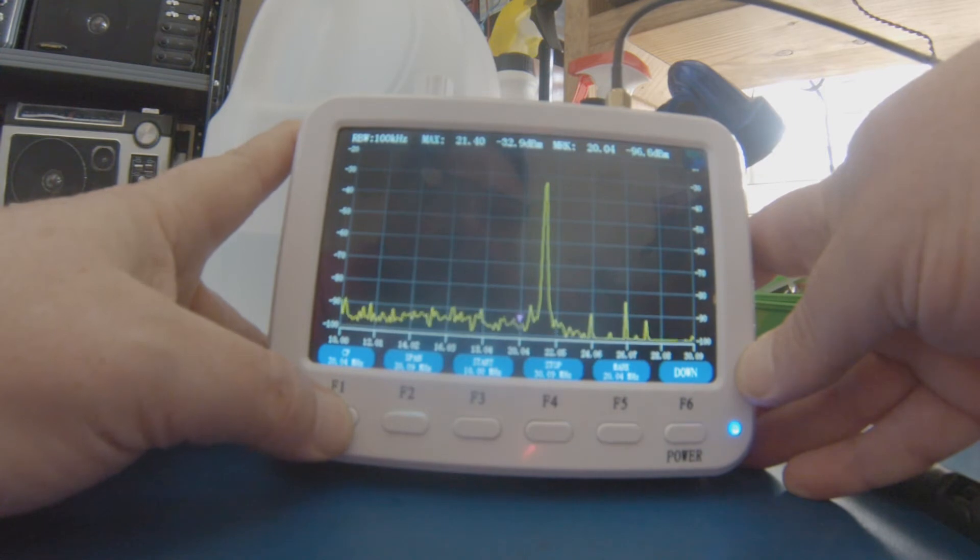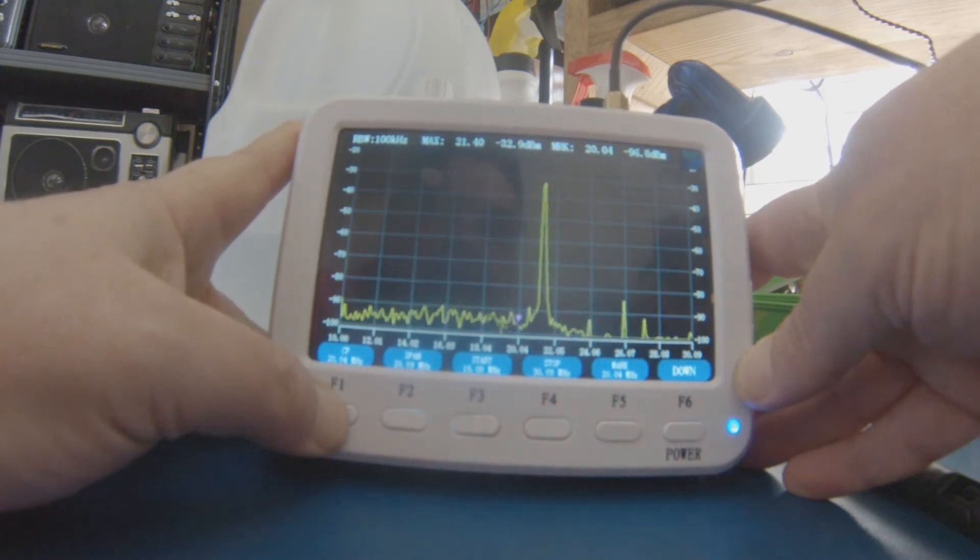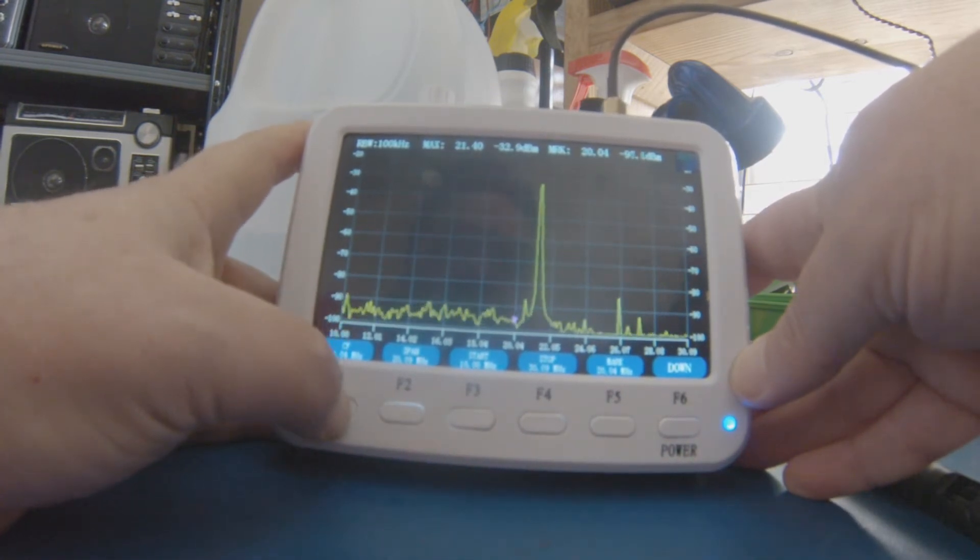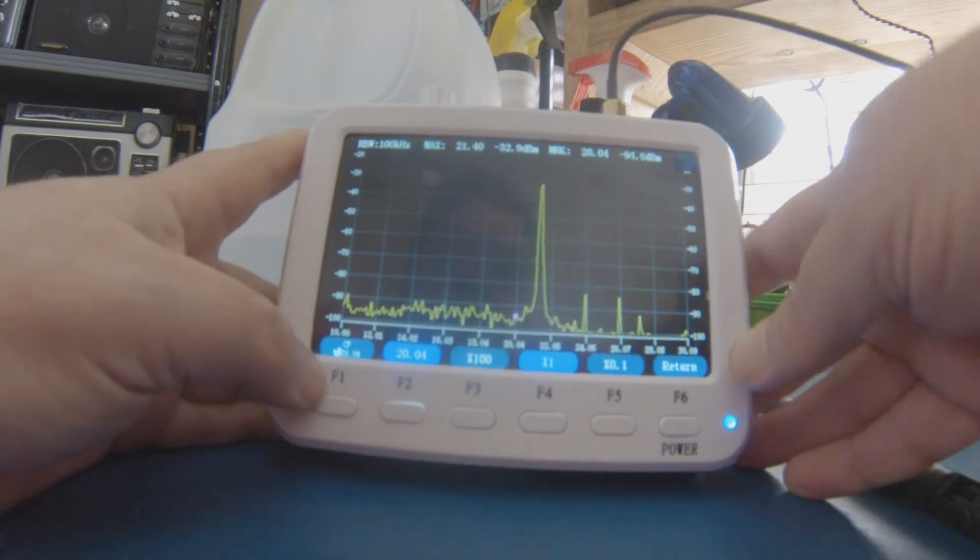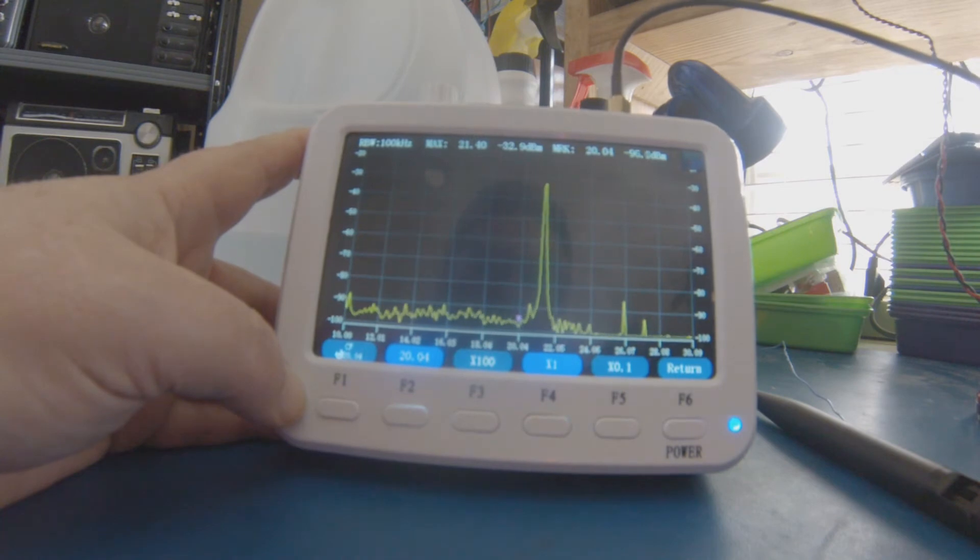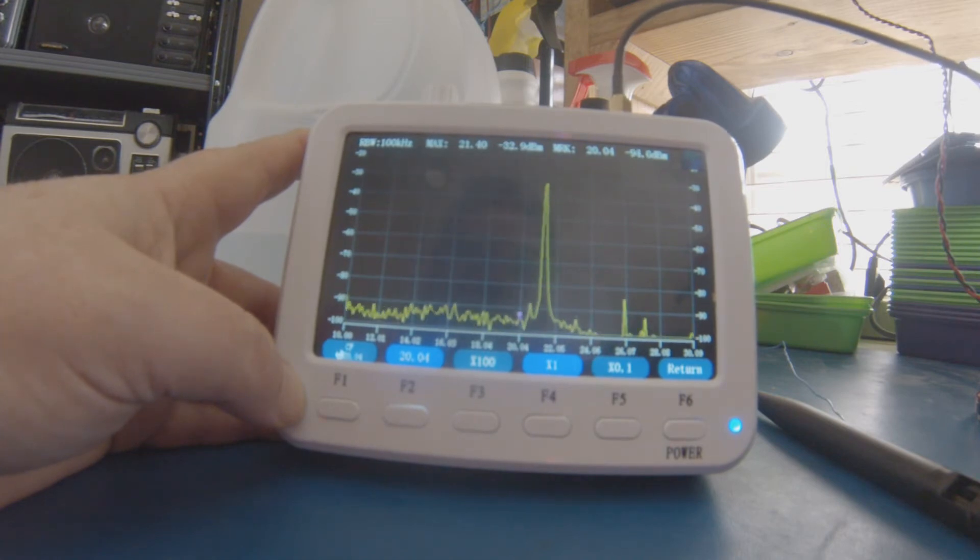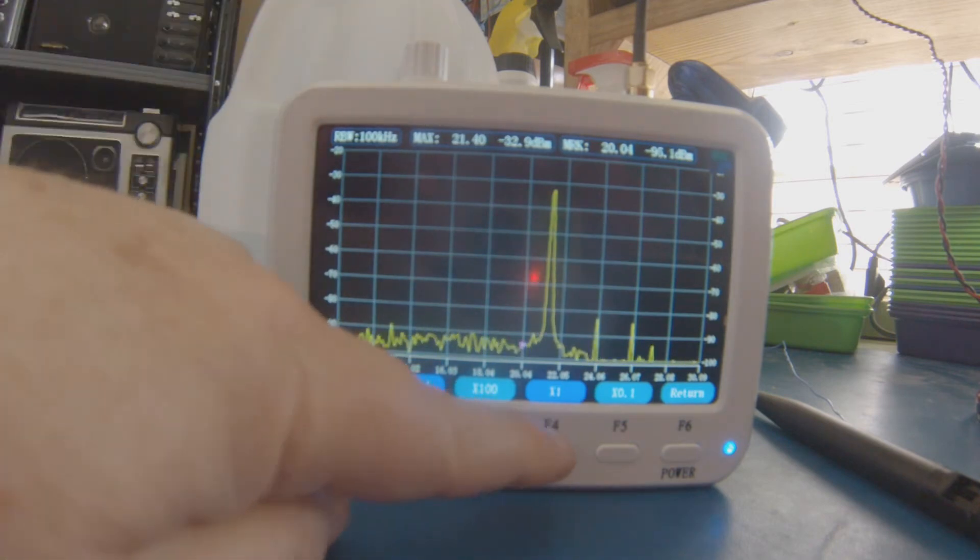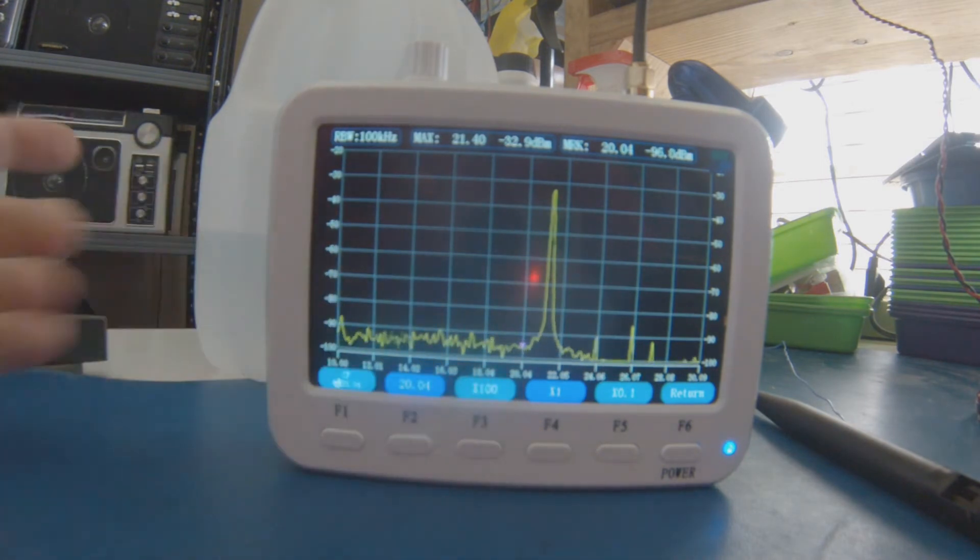For instance, if I want to do a center frequency, I hit the center frequency button. Okay, there we go. Now you can see two of the soft keys are blue. One above F2 shows the current center frequency, which is 20.04, and again, this is one of the weaknesses of this unit. The only options I have for setting it are this scroll wheel on top. With that, I can set it by one megahertz increments, by a hundred (times 100), or times 0.1. That's all I can do.